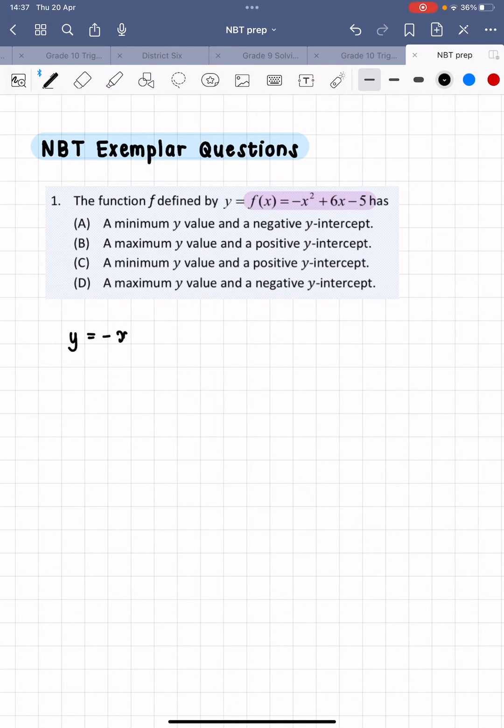If we have negative x squared plus 6x minus 5, if we look at the a value, the number in front of x squared, that is a negative number.